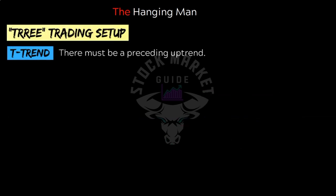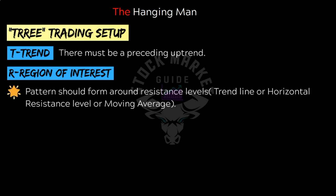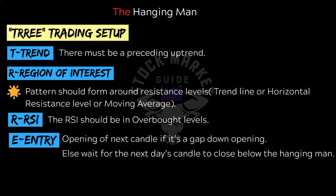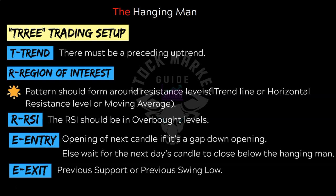Now let's understand the trading setup. The first step is T for trend — the trend must be up in case of hanging man. Then the region of interest — since this is a bearish reversal pattern, it should form around resistance levels, such as a trend line, horizontal resistance, or moving average. RSI should be in overbought levels. Entry can be at the open of the next candle if there is a gap-down opening; else wait for the next day's candle to close below the hanging man candle. Always take your confirmations and never trade candlesticks in isolation. For exit, take your target at the previous support level or swing low. You can exit at 50% of that level, use a 1:2 risk-to-reward ratio, or trail your stop loss and ride your profits longer.